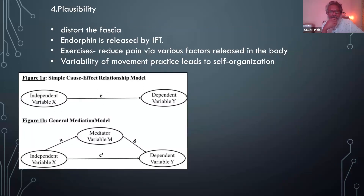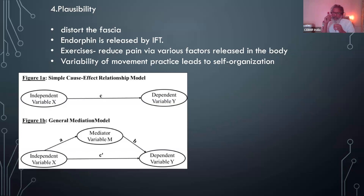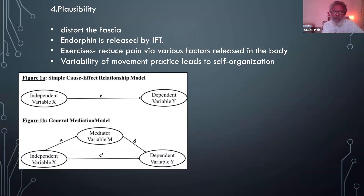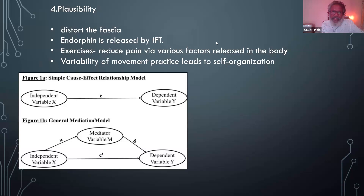And this is where we all fail — there should be a possibility of how this relation is defined, i.e., X causes Y. The dengue mosquito bites me and causes dengue; the mediator is the virus inside the mosquito. That is the plausibility point. I've given examples: you distort the fascia, endorphins are released; IFT reduces pain; variability in movements leads to self-organization — movements becoming more stable. I'll ask you later if you think all four are true, false, or some.